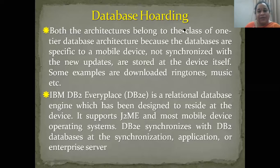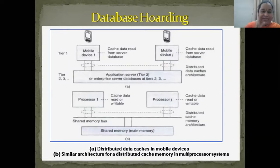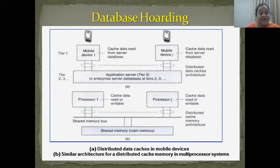We have two types of categories. First: distributed data caches in mobile devices — the cached data is going to be stored on the database of the mobile application. In the application, we store the data in the database. Not only pertaining to a single database or a single mobile — we have to maintain a copy. There are also distributed caches in the mobile device. We can add a similar architecture for distributed caches in a multi-process system.